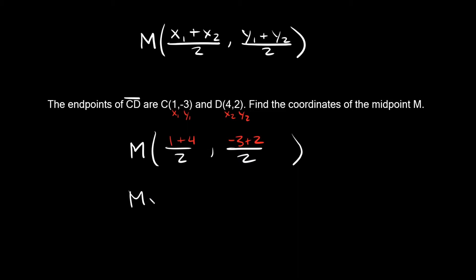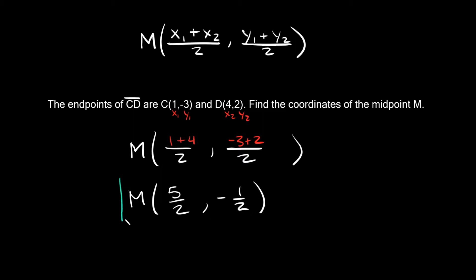So 1 plus 4 is equal to 5, so we're going to have 5 over 2. And negative 3 plus 2 is equal to negative 1. Negative 1 divided by 2 is equal to negative 1 half. So the midpoint coordinates for this one are at 5 halves, comma negative 1 half.